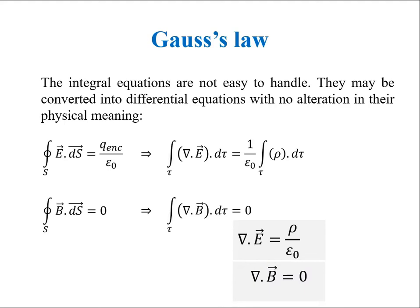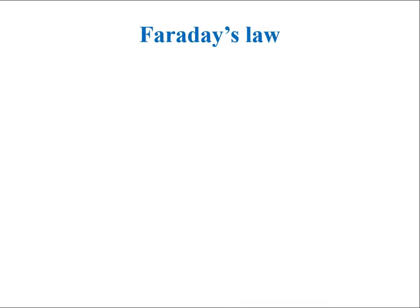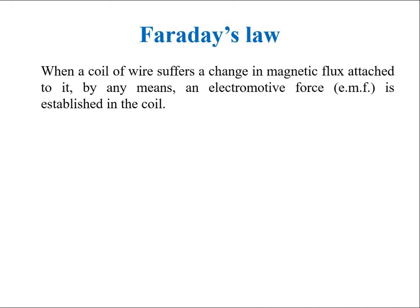The second law is the Faraday's law. It establishes the connection between electric field and magnetic field. It says that when a coil of wire suffers a change in magnetic flux attached to it by any means, an electromotive force EMF is established in the coil. This is the mathematical expression of the Faraday's law. The negative sign represents that the induced EMF opposes its cause.